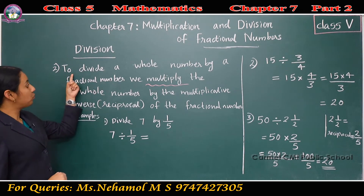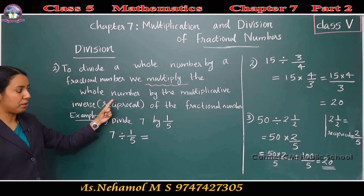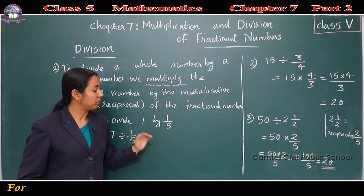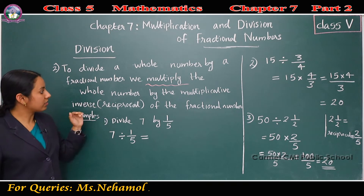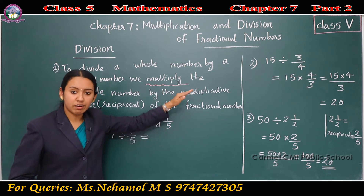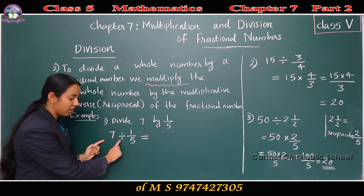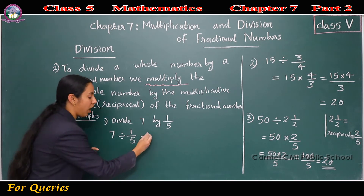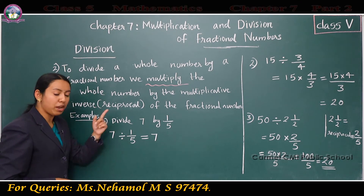Second case: to divide a whole number by a fractional number, we multiply the whole number by the multiplicative inverse or reciprocal of the fractional number. Consider an example: divide 7 by 1/5. Here we have one whole number and one fractional number. First write the whole number itself, then take the reciprocal of the fractional number and multiply.